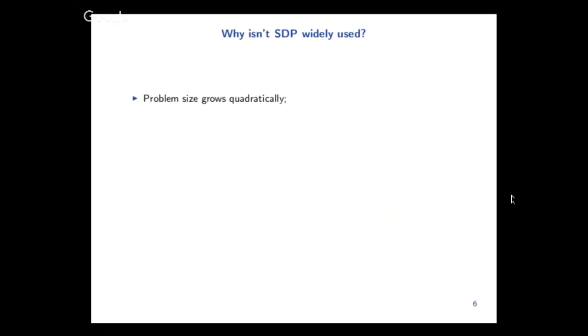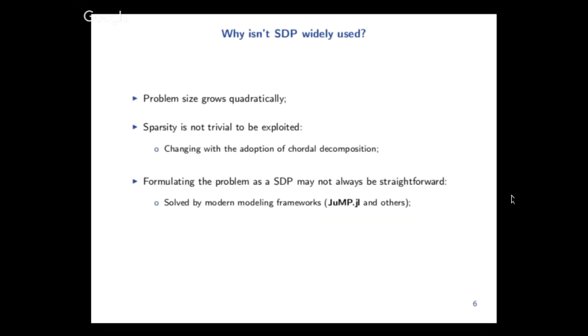So if it's such a great tool, why does no one use it, right? The problem is that naturally you have a lot of matrices, and then these matrices, the problem size goes drastically. Usually the real variable size is actually the square of the real size you're interested in solving the problem. Also, sparsity is not true to be exploited, and the first time I heard about a real solver that has exploited sparsity was yesterday. Even formulating SDPs is not straightforward, and that's where JuMP comes into the picture.